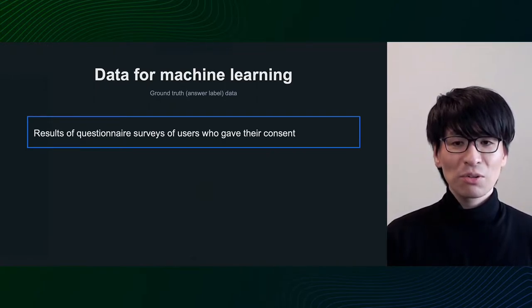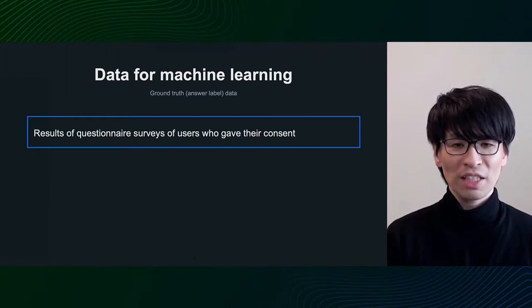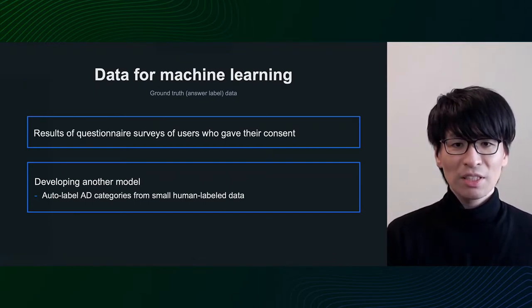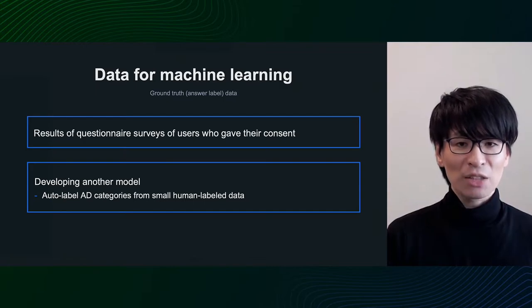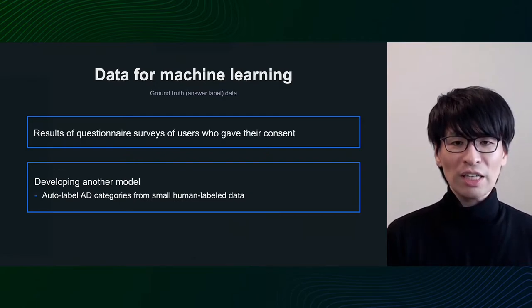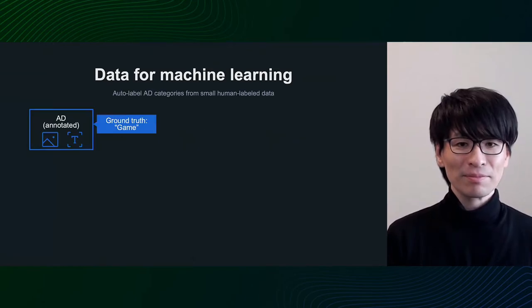Next, I will talk about the correct answer data required for model learning in addition to feature data. In the user persona system, we mainly focus on the results of questionnaires conducted on consented users as correct answer data. In some cases, another model was developed to prepare the correct answer data — specifically, an automated process that uses manually labeled or annotated data. This is a rather complicated system, so I will introduce it with diagrams in the next slide.